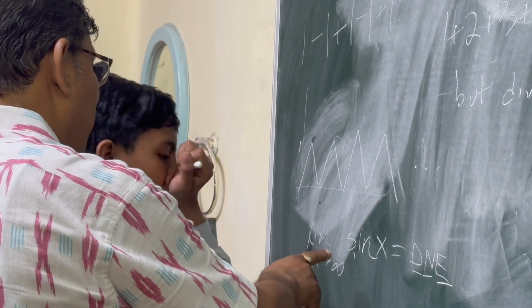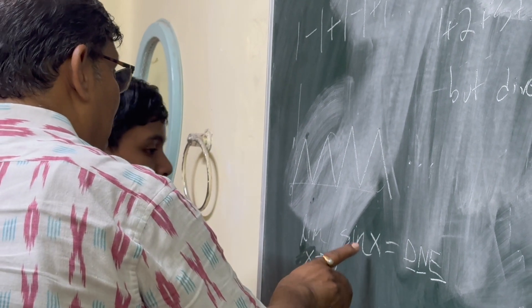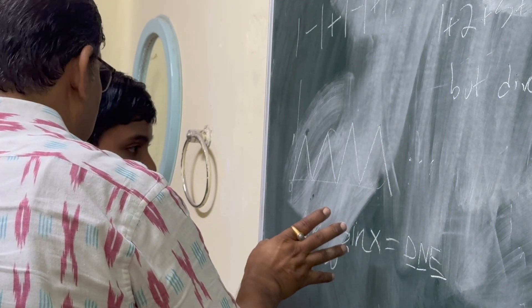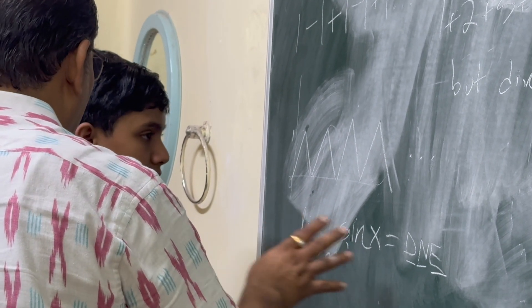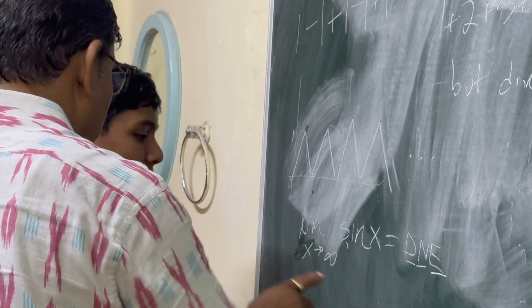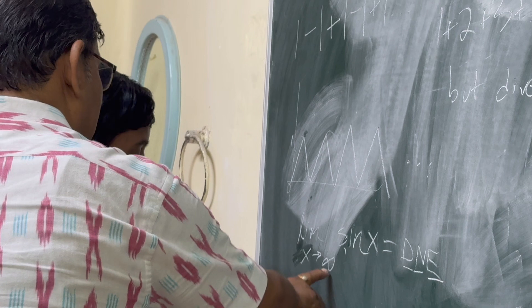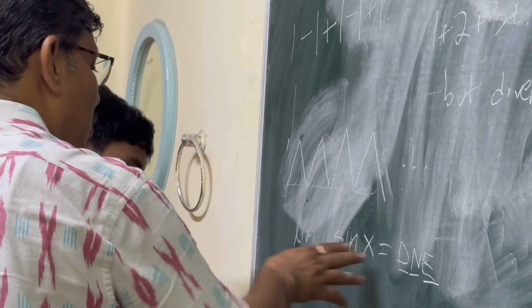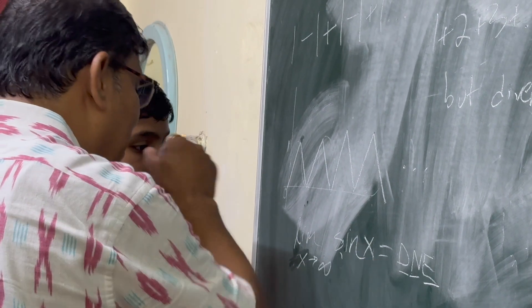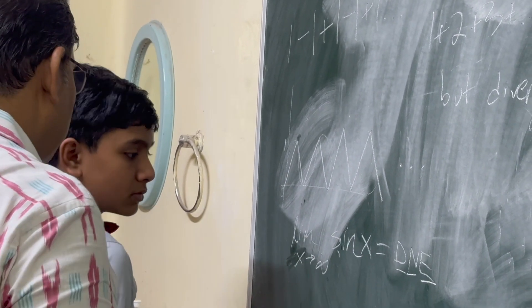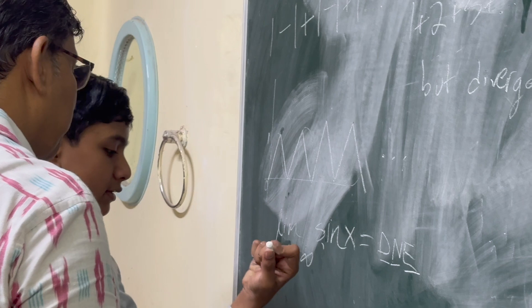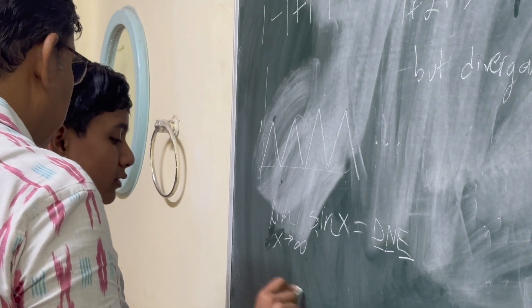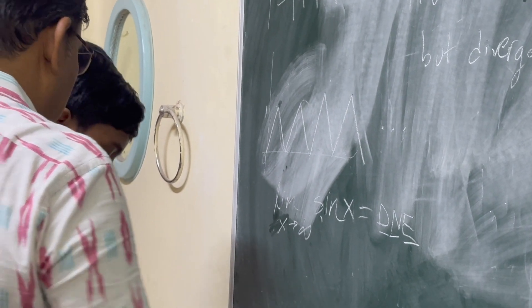Because sin(x) is between minus 1 and plus 1 for all x. So whenever x goes to infinity, how can it go beyond minus 1 to plus 1?